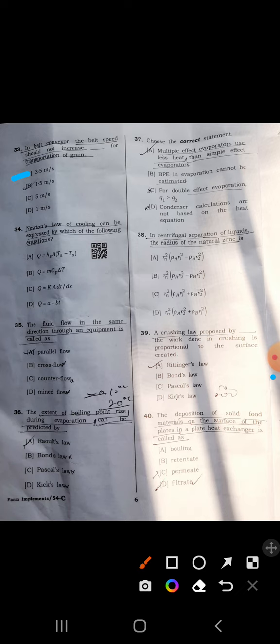Thirty-sixth: extent of boiling point rise during evaporation can be predicted by Duhring's law. Thirty-seventh: choose correct statement, C is correct.